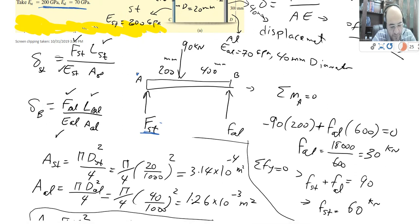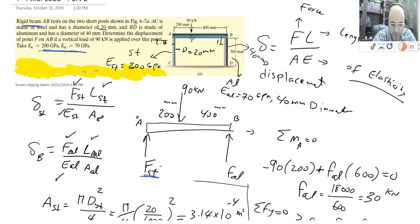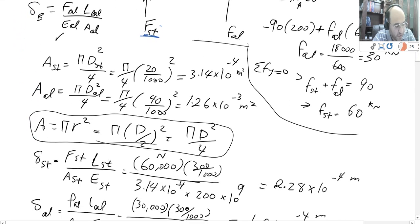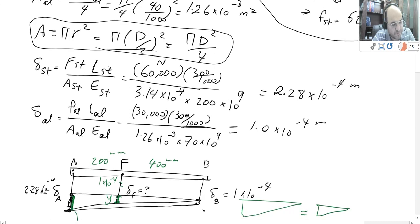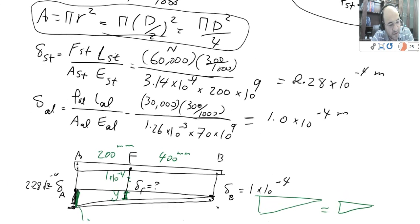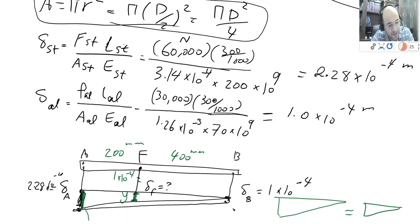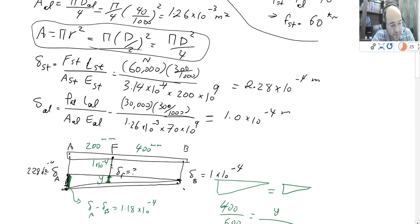For instance, F of steel is 60 kilonewtons, the length of steel is given as 300 millimeters which is 0.3 meters. E of steel is 200 gigapascals, which is 200 times 10 to the power of 9. I substitute all the numbers: delta for steel is F of steel times L of steel — 60 times 0.3 divided by A of steel times 200 times 10 to the power of 9. So I found delta for steel and delta for aluminum.